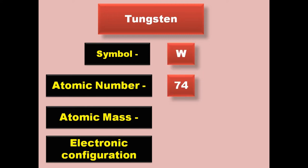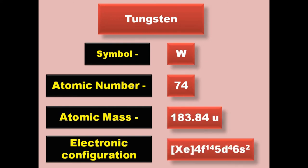Tungsten has symbol W, atomic number 74, atomic mass 183.84, electronic configuration [Xe] 4f14 5d4 6s2. Tungsten is a transition metal and exists in solid form at room temperature.